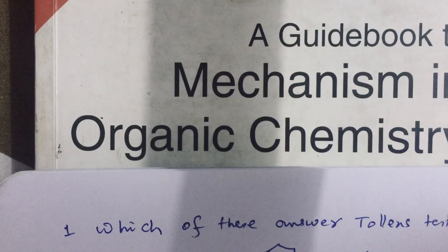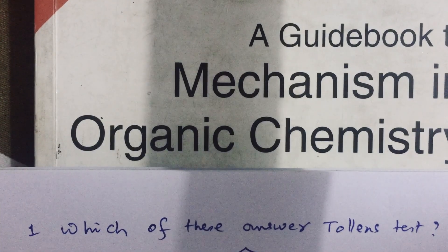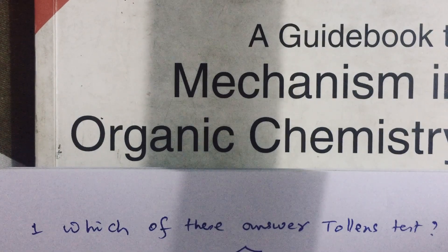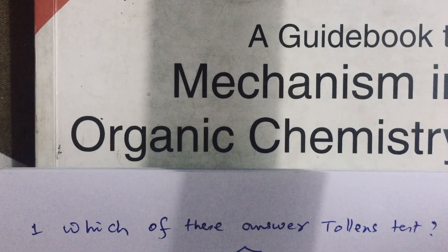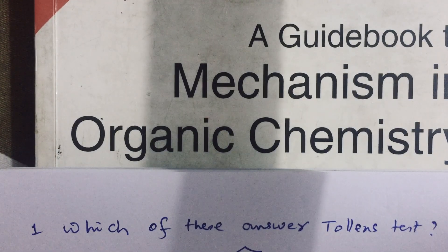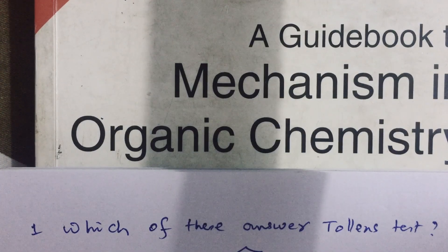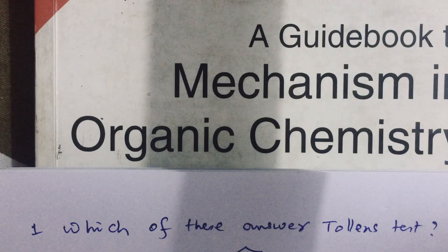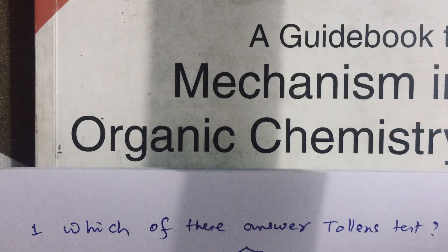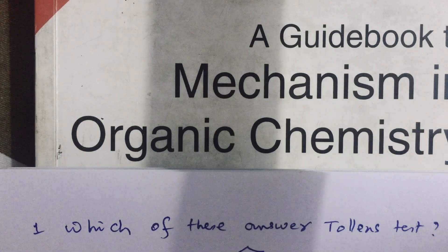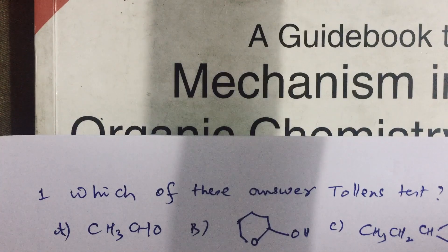Question number one. Which of these answer Tollens test? You know that Tollens test is answered by aldehydes, which can easily undergo oxidation so that the silver ions of ammonical silver nitrate, that is Tollens reagent, are reduced to silver mirror and the aldehyde is converted to carboxylate ion. Notice that Tollens reagent is operating in basic medium. First option is an aldehyde, definitely it can.